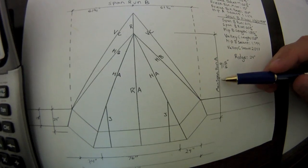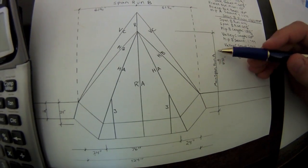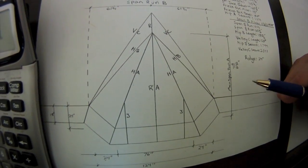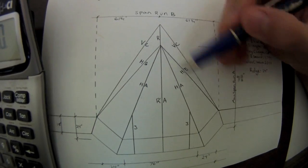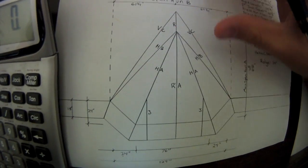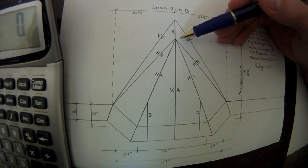But as we see here, we show span run A, main span run A. Now how would you come up with that? Where do you know when to tie these two hips in and how far back to do it? This is a problem that many people have.